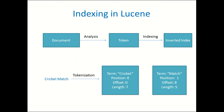This shows us the basic flow of indexing, and indexing is of course one of the most important steps in Lucene. Every piece of data is called a document, which is analyzed by an analyzer and broken down into tokens. Then the tokens are indexed and stored in the inverted index and the index.